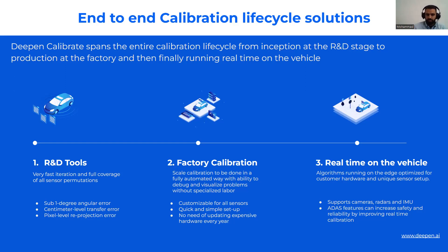For R&D, we offer a web-based tool that is fully automated — or can be fully automated — with APIs covering all these sensor permutations, so you can iterate quickly, try different sensors, different positions, and different sensor types to check accuracy and get calibrations quickly. Once you're happy with what you've chosen, we provide an optimized, super-automated workflow for production at the factory floor that is customizable with no human in the loop, but with the ability to debug issues very easily if something happens so you don't need to stop the line for long.